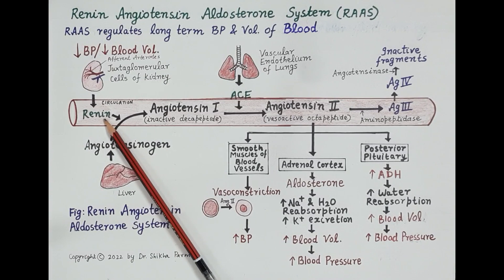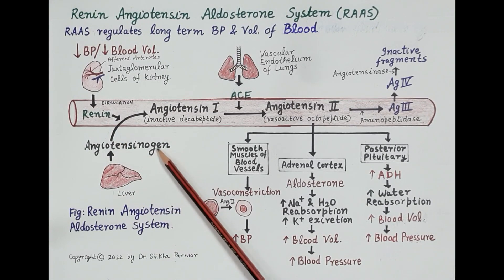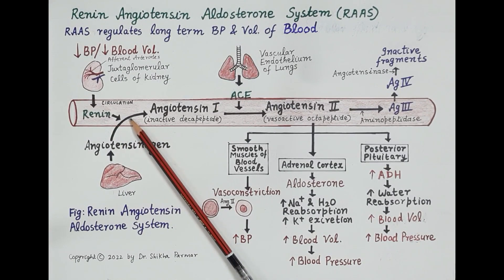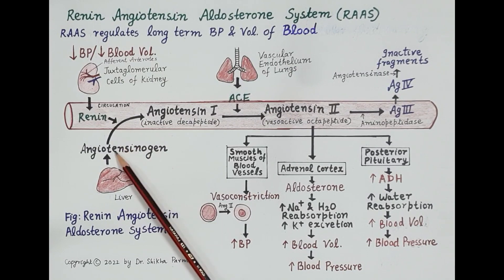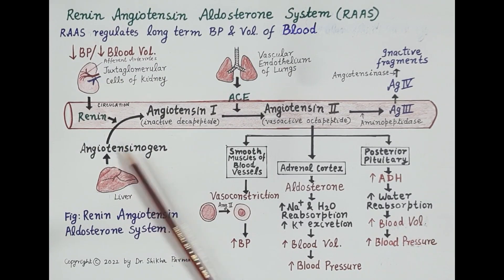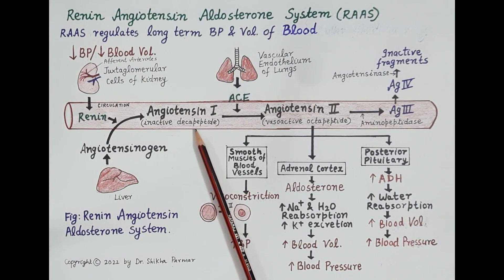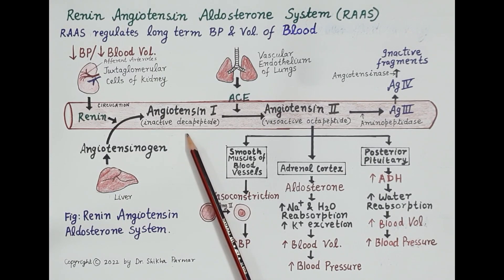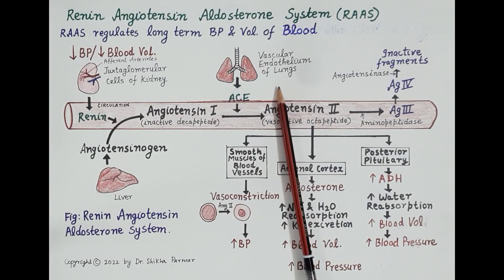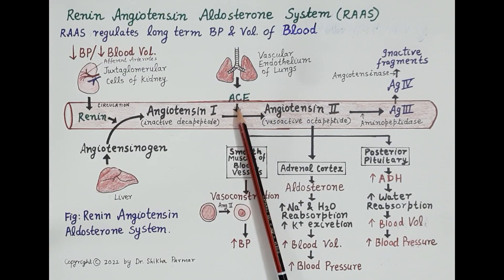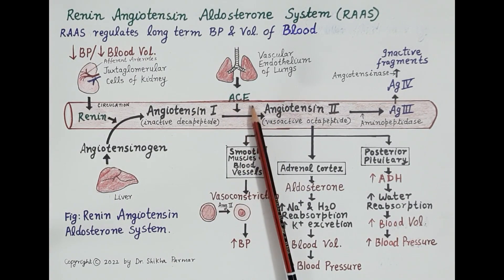In response to a fall in blood pressure or blood volume, the juxtaglomerular cells of the kidney release renin into the blood. The liver produces angiotensinogen, which is also released into the blood. Renin breaks angiotensinogen into the inactive decapeptide Angiotensin 1 — made up of 10 amino acids — which circulates in the blood. The vascular endothelium of the lungs produces an enzyme called Angiotensin-Converting Enzyme, or ACE.